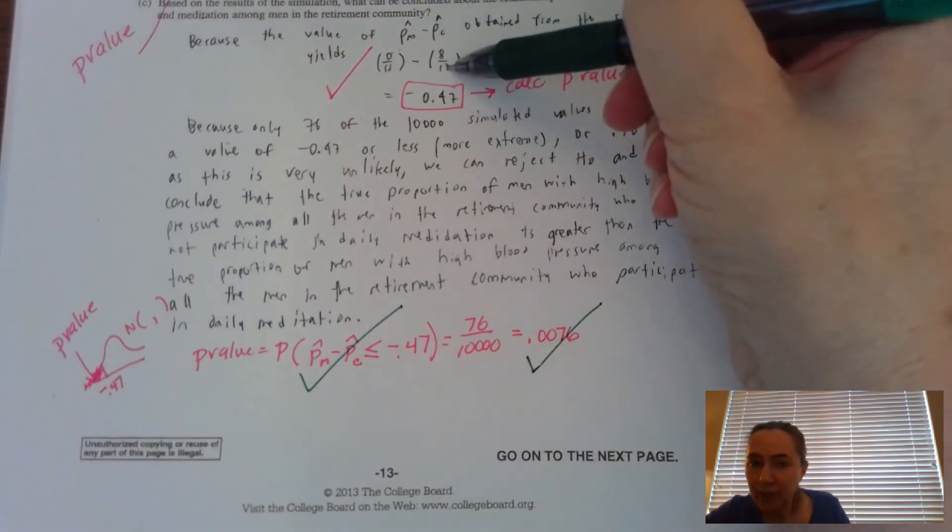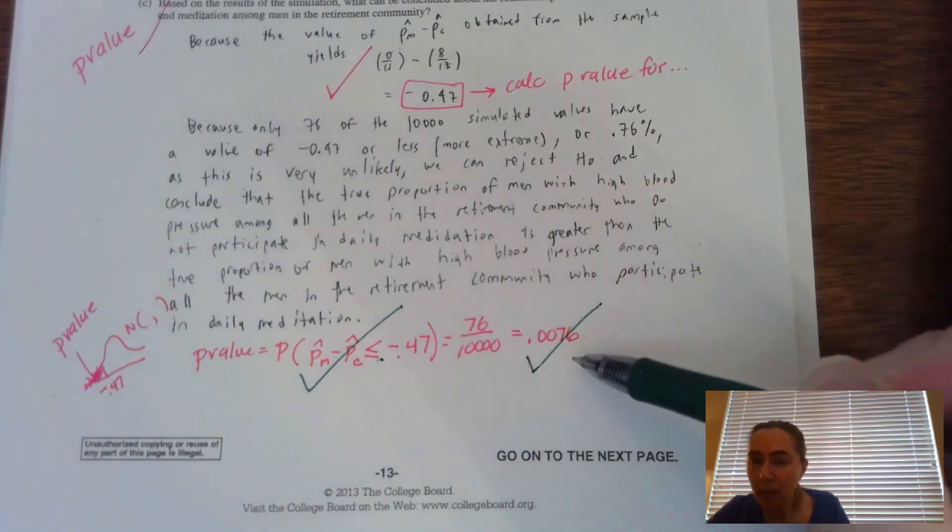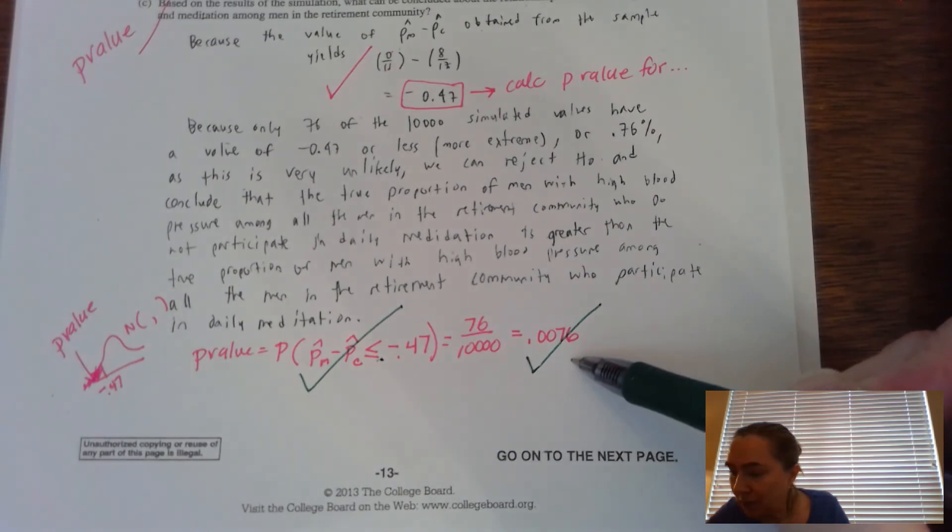So we have one check for finding the difference, one check for setting up the inequality here for the probability that we're trying to find. That represents the P value and one for the actual P value. So now in the conclusion.